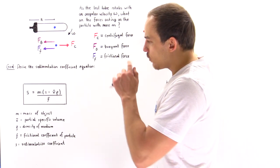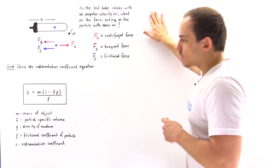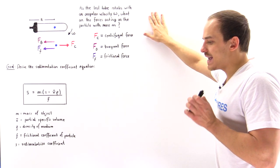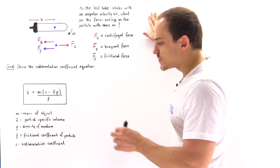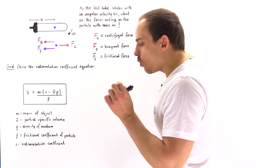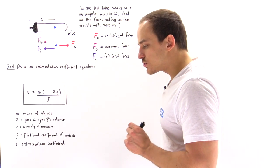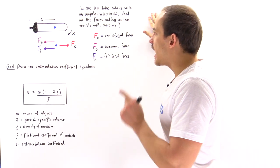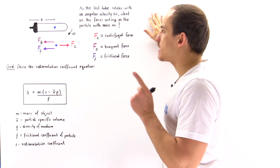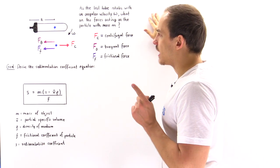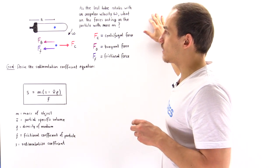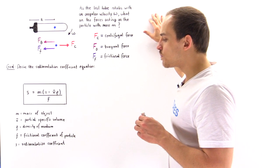The distance from that particle to the axis of rotation is given by r — this is the radius of the circle circumscribed by the rotating particle shown in blue. Before we begin our derivation, we want to ask: what are all the forces acting on that blue particle as it rotates inside our test tube?